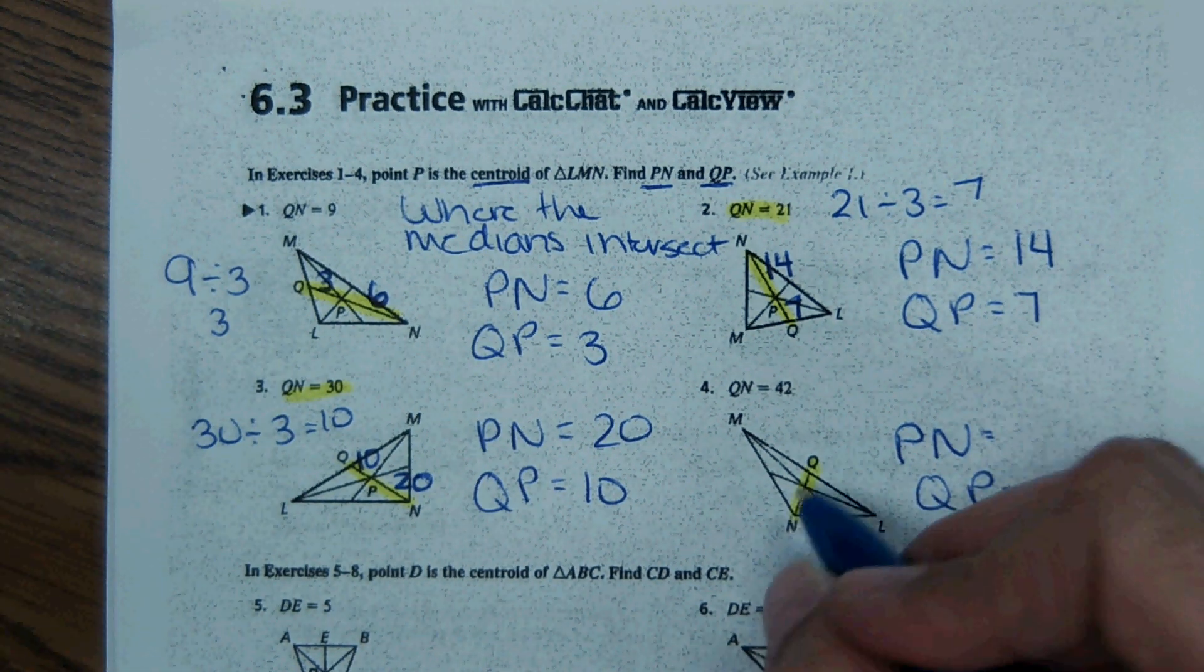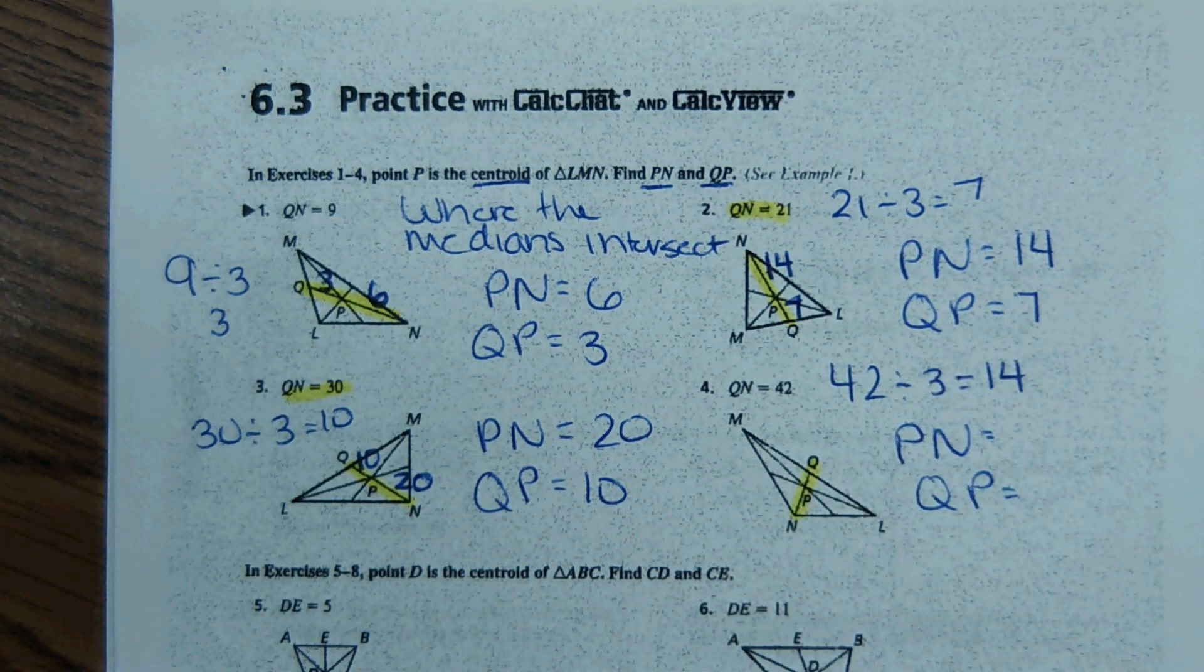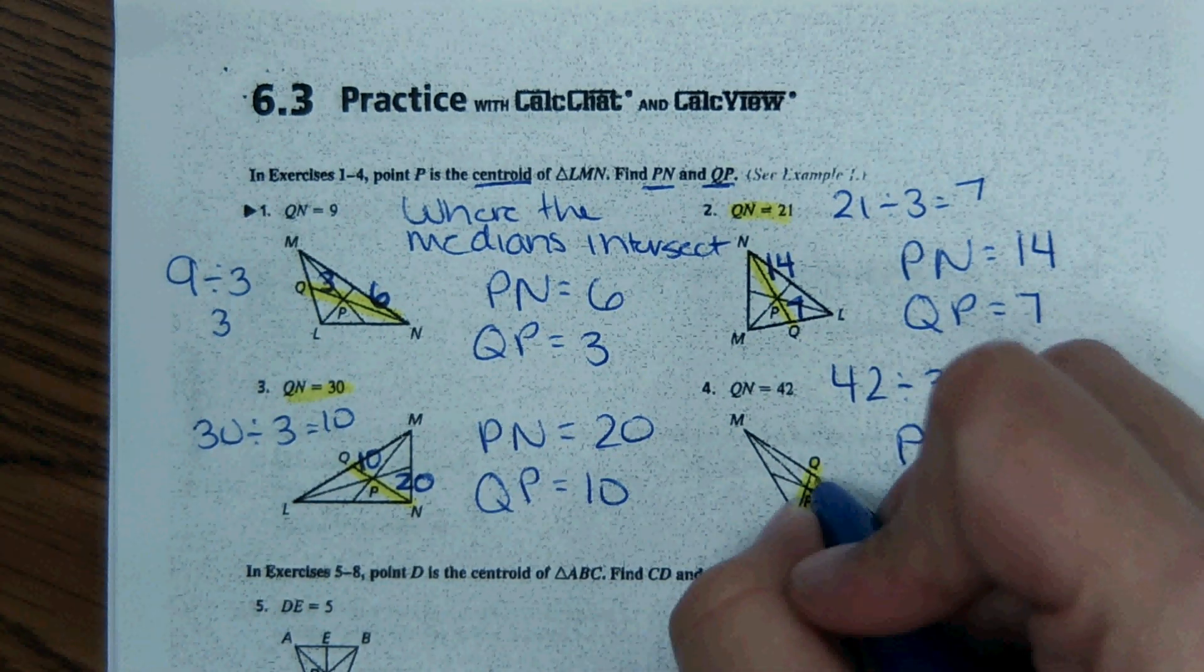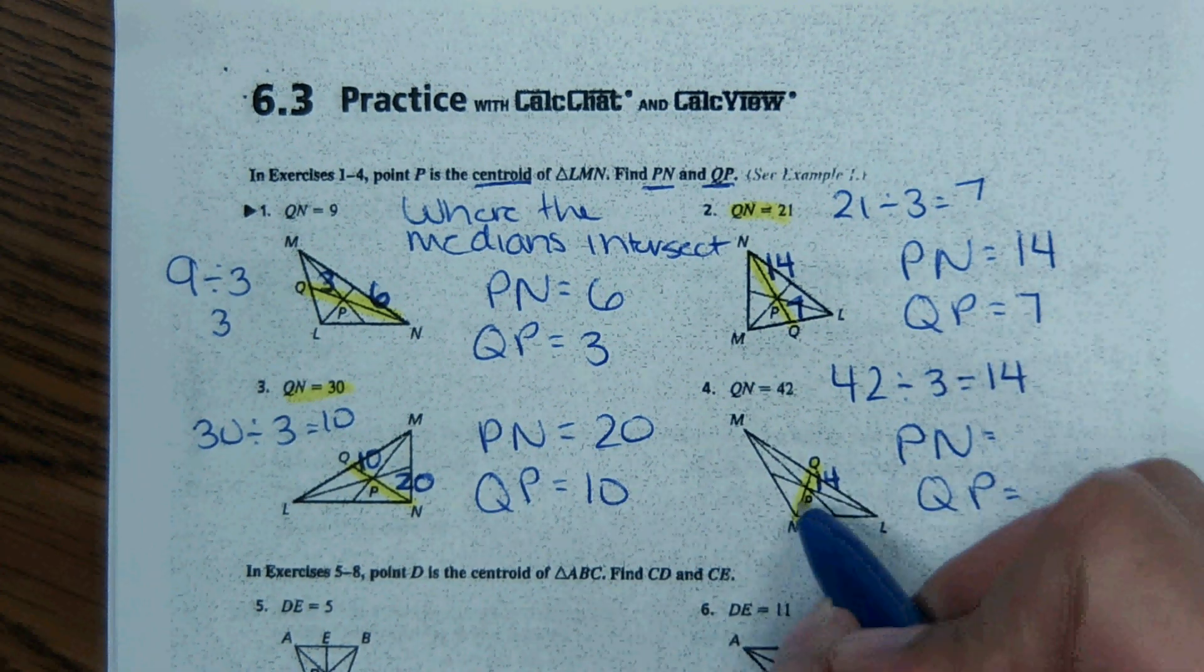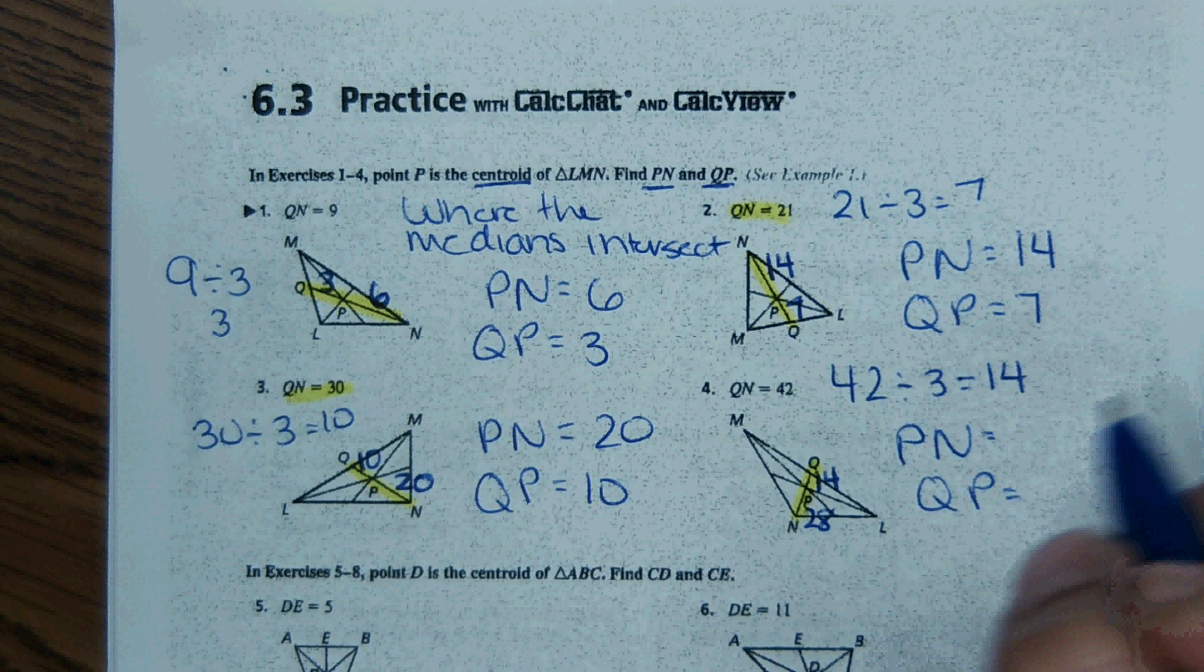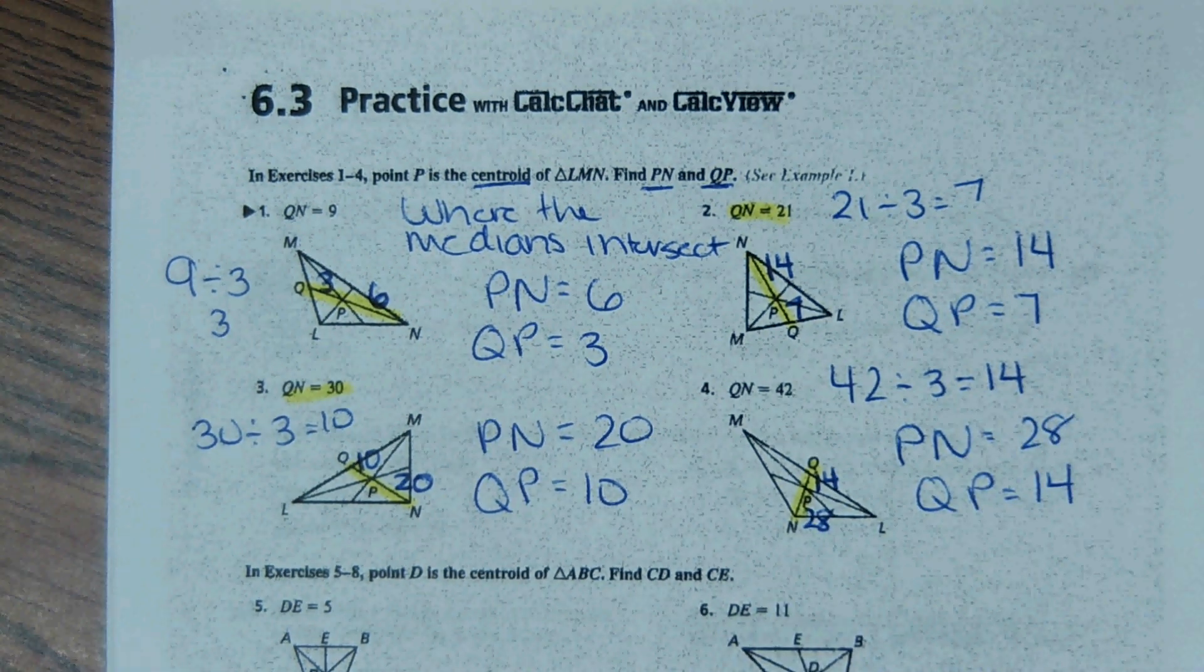So QN is 42 units long. So if I take 42 divided by three, it comes out to 14. So the shorter side would be 14, and then the longer part would be double that, which is 28. So PN is 28, and QP is 14.